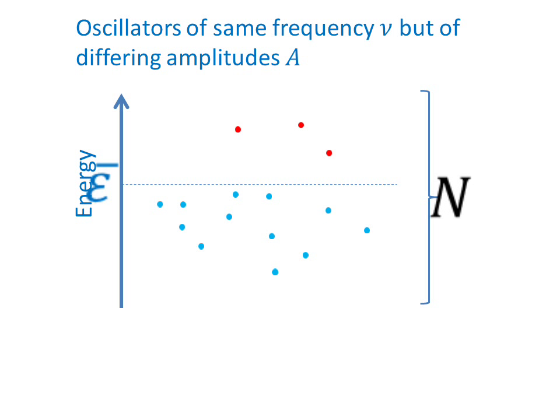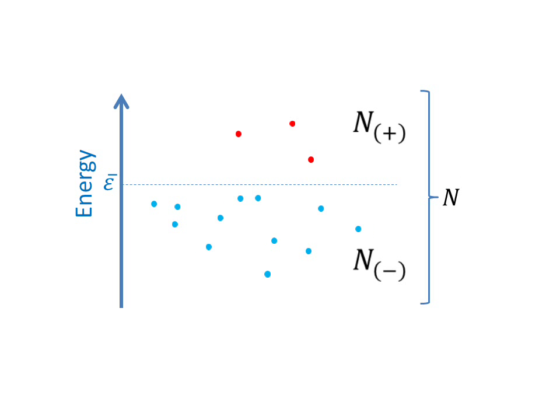Now, observe n oscillators having frequency ni and average energy epsilon bar. The amplitudes of the oscillators differ. These n oscillators consist of two fractions. One is n sub plus, that is, the fraction to which all the oscillators with energy above the average energy epsilon bar belong. The other fraction is n sub minus, which consists of those oscillators that have energy below the mean energy epsilon bar.